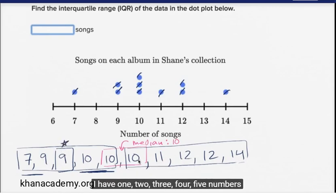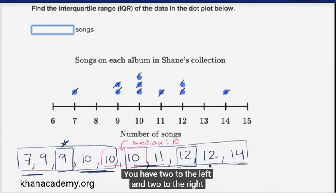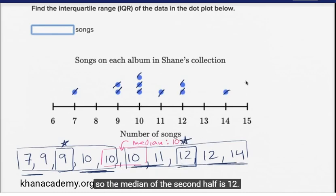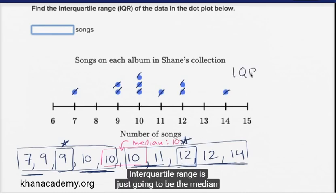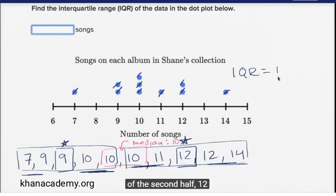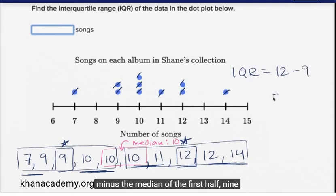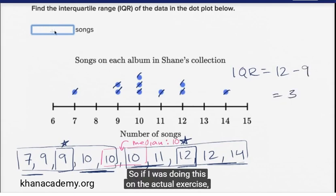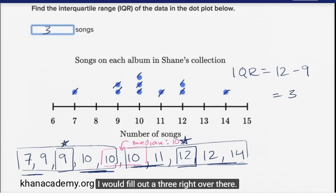And the middle of the second half — I have five numbers, and twelve is right in the middle with two to the left and two to the right. So the median of the second half is twelve. The interquartile range is just going to be the median of the second half, twelve, minus the median of the first half, nine, which is going to be equal to three. So if I was doing this on the actual exercise, I would fill out a three right over there.